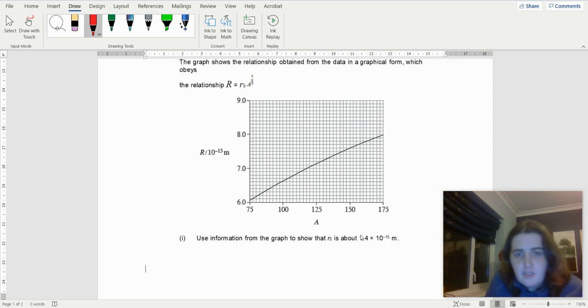So the first thing you do is you take some points. And normally when you say use information from the graph, I tend to use at least 2 to 3. So I've got 100, and that is there, and that's 1, 2, 3, 4, 5, 6. So when A is 100...